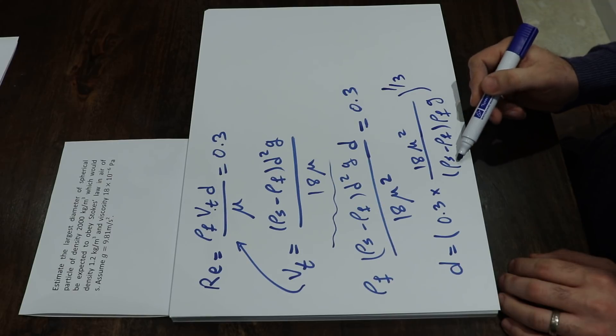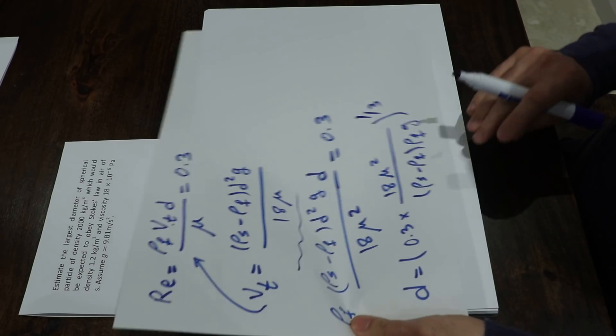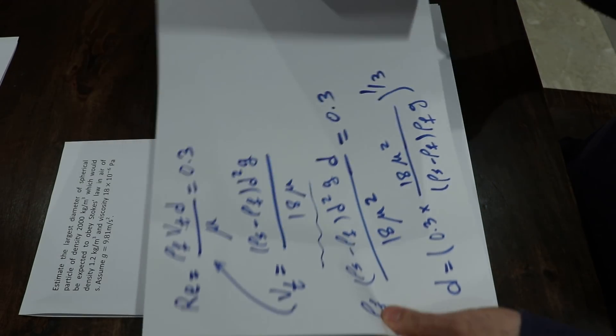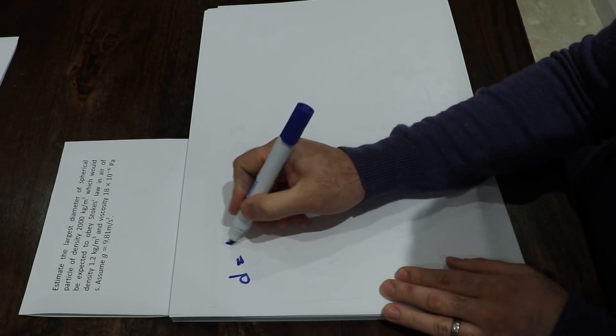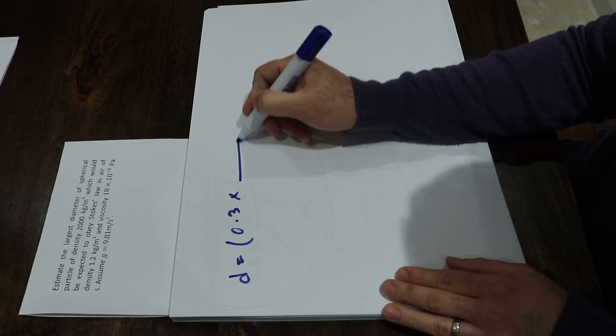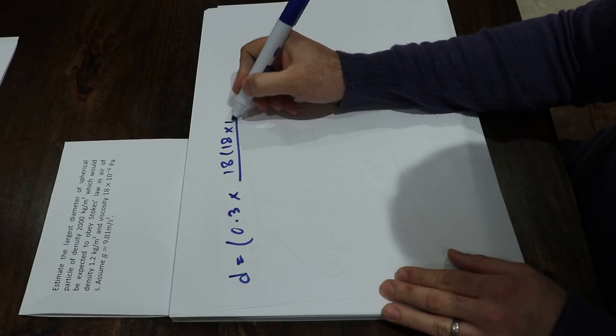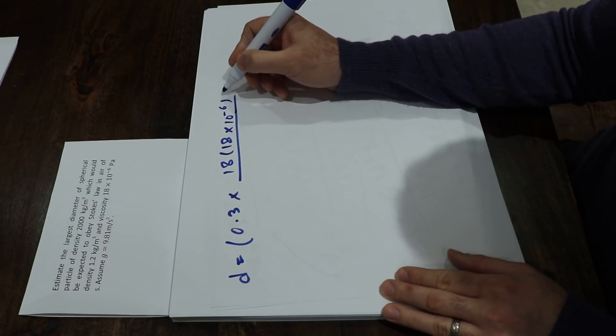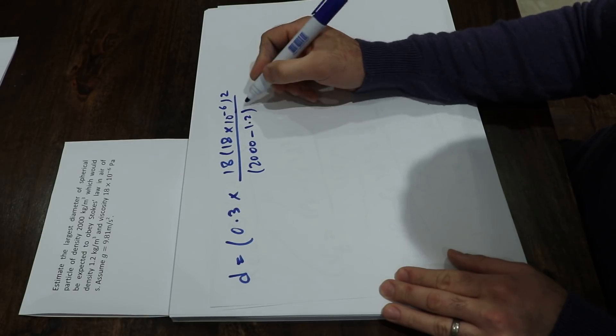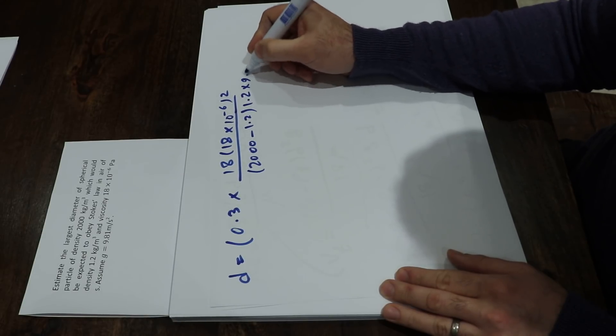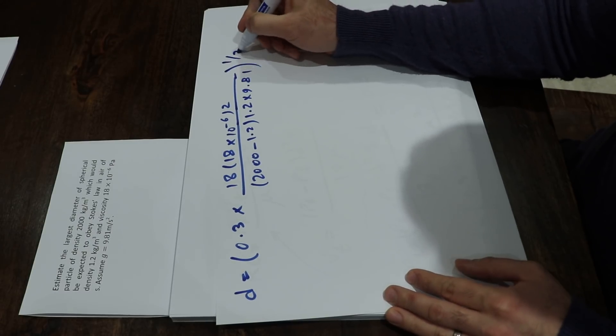Now you have all the parameters: μ is given in the question, ρs is given, ρF is given, g is given. You just need to plug the values into this last equation. If you do so, you get: d = [0.3 × 18 × (18×10⁻⁶)² / ((2000 - 1.2) × 1.2 × 9.81)]^(1/3).